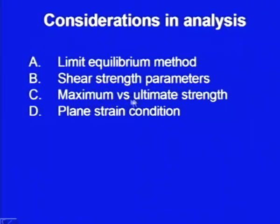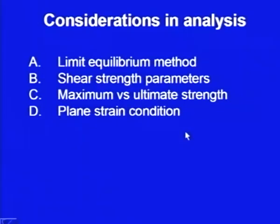We also discussed about the use of maximum versus ultimate strength. In case of clays, the shearing strain has an influence on the shear strength parameters; for high strains it has been found that the strength becomes low. So it was suggested that especially for over-consolidated clays, not to use the maximum value of the shear strength parameters, rather to use the ultimate strength. We also discussed about the plane strain condition, which means we consider the slope in two dimensions, take unit length perpendicular to the plane of paper, and assume no deformation in the third dimension — this gives somewhat conservative results.